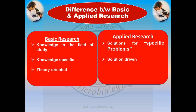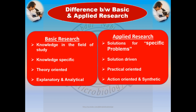One more point: basic research is theory-oriented — no experimental work is carried out; it is just based on focusing on theoretical knowledge. Applied research is practical and experimental-oriented — lab work is done in applied research. Basic research is also explanatory and analytical, while applied research is action-oriented and synthetic.